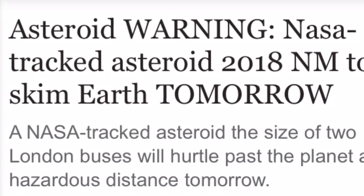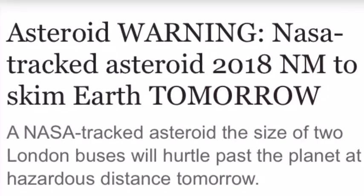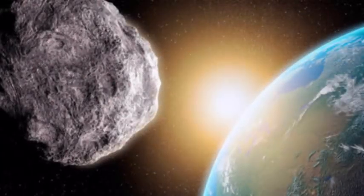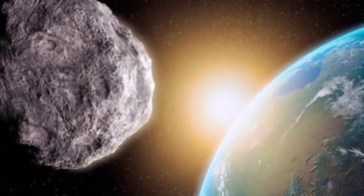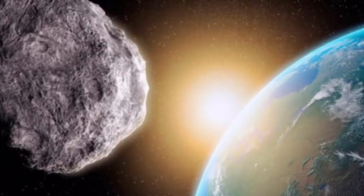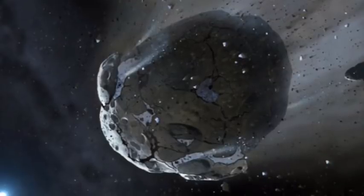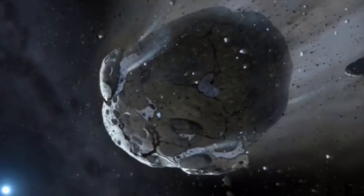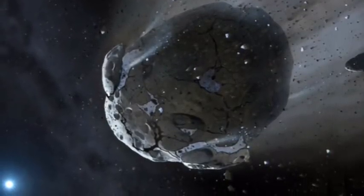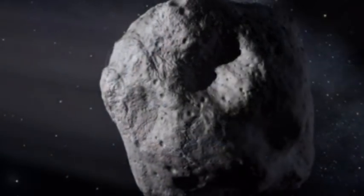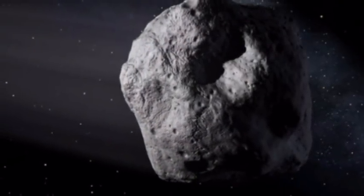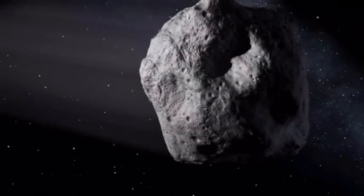Asteroid warning: NASA tracked asteroid 2018 NM to skim Earth tomorrow. A NASA-tracked asteroid the size of two London buses will hurtle past the planet at a hazardous distance tomorrow. The space rock dubbed asteroid 2018 NM will skim past the planet in the early morning hours of Tuesday, the 17th of July.